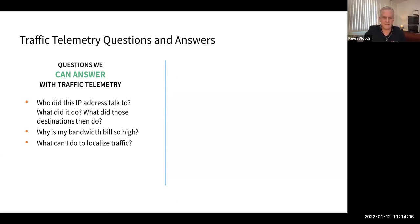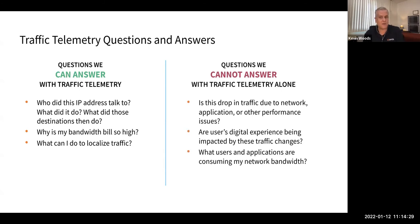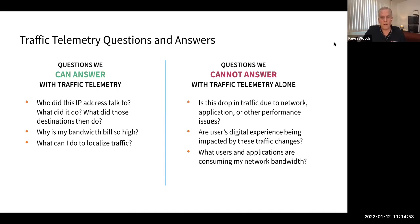Let's look at a telemetry type example: traffic telemetry — NetFlow, SFlow, or IPFIX. With this, I can answer questions like: who did this IP address talk to? What did it do? Why is my bandwidth bill so high? What can I do to localize traffic? But with traffic telemetry alone, I cannot answer: if there's a drop in traffic, is it due to an application or another performance issue? Is the digital experience of my users being impacted? What users or applications are consuming bandwidth? We need other telemetry types to answer those questions.